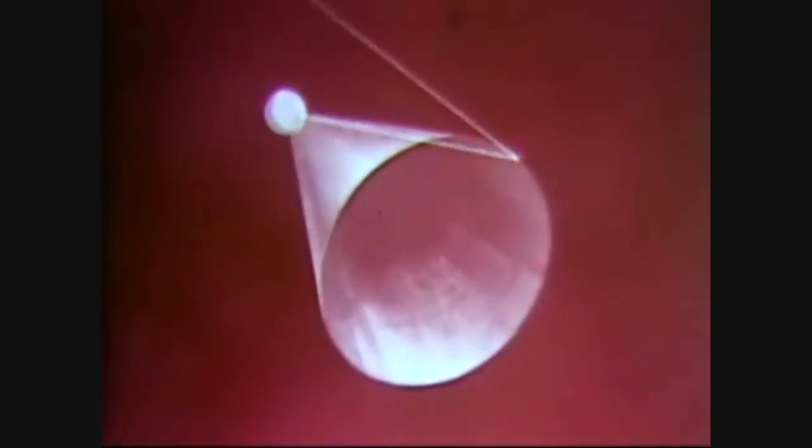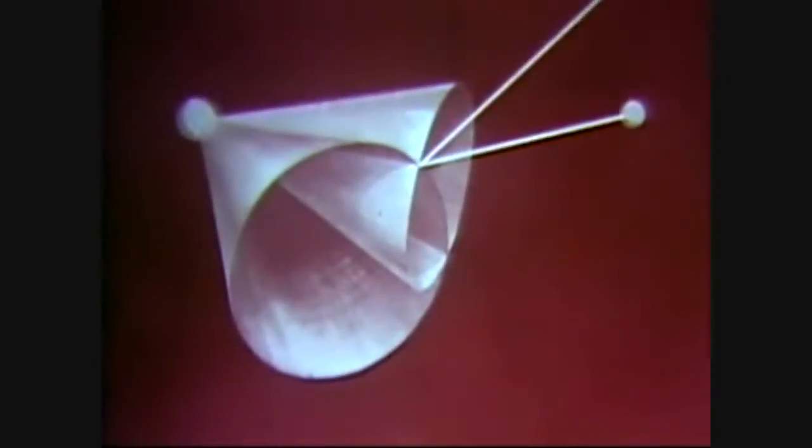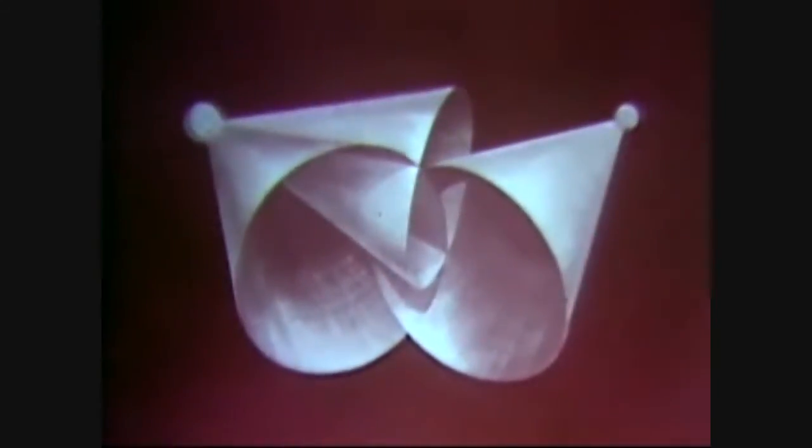A more precise method for determining position uses three sightings from separate known bodies. The three cone-shaped surfaces intersect and establish a point of position.